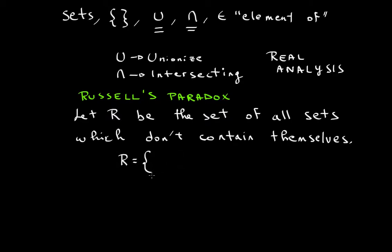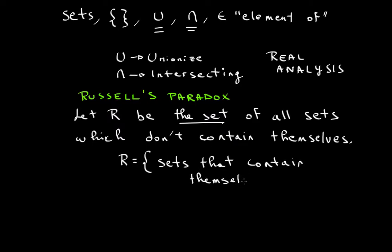So R is a set which includes all the sets that don't contain themselves. That's what this looks like. The question is: is R an element of R? And that's what the paradox is.